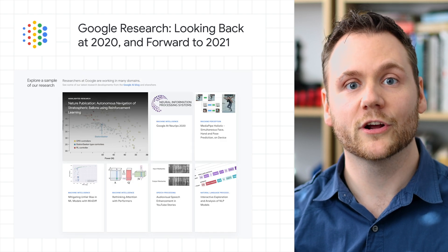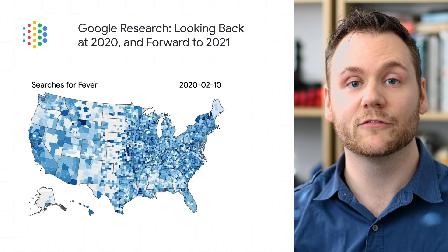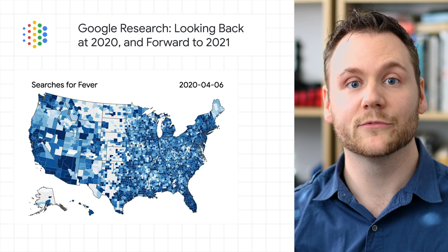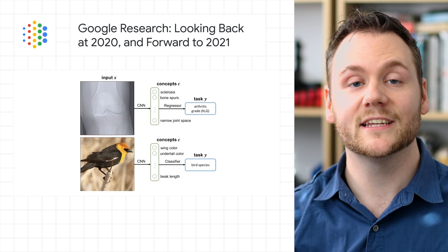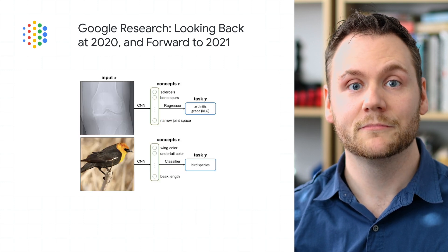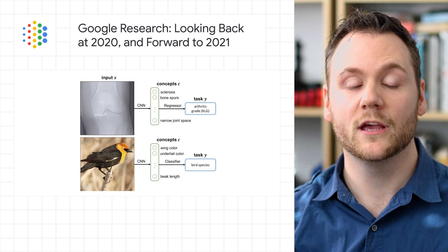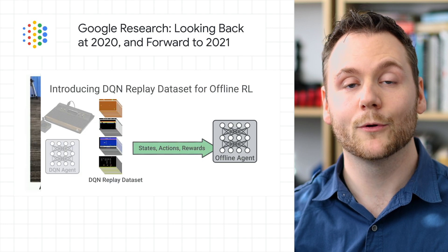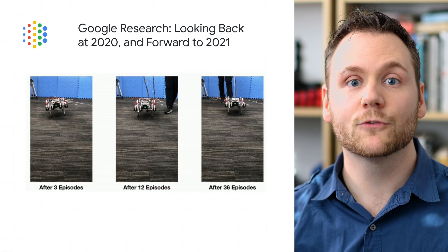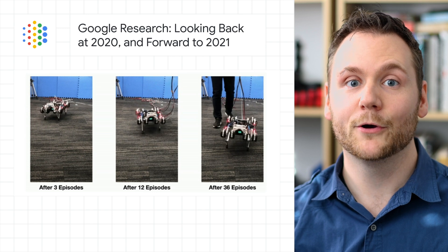The goal of Google Research is to work on long-term, ambitious problems across a wide range of important topics — from predicting the spread of COVID-19, to designing algorithms, to learning to translate more and more languages automatically, to mitigating bias in ML models. This post on the Google AI blog covers key Google Research highlights from 2020 across a huge range of topics like accessibility, reinforcement learning, robotics, and more, and looks forward to what's next in 2021 and beyond. Head to the post to dive in.